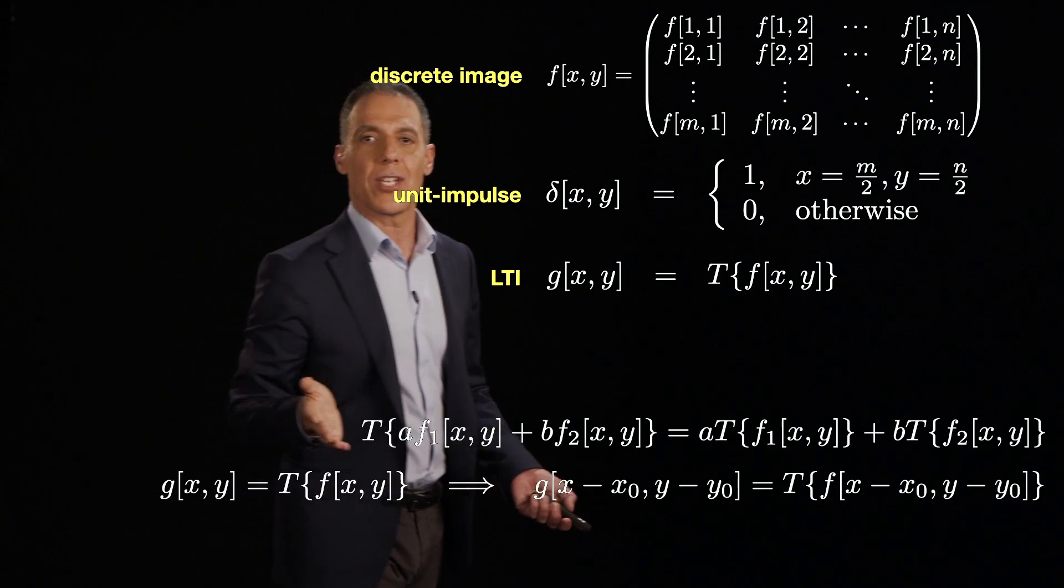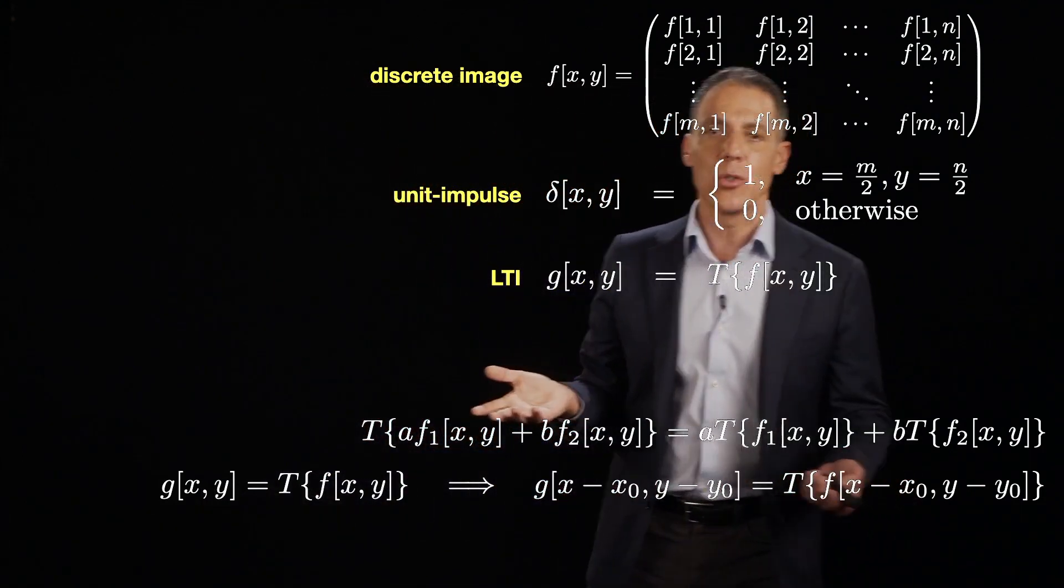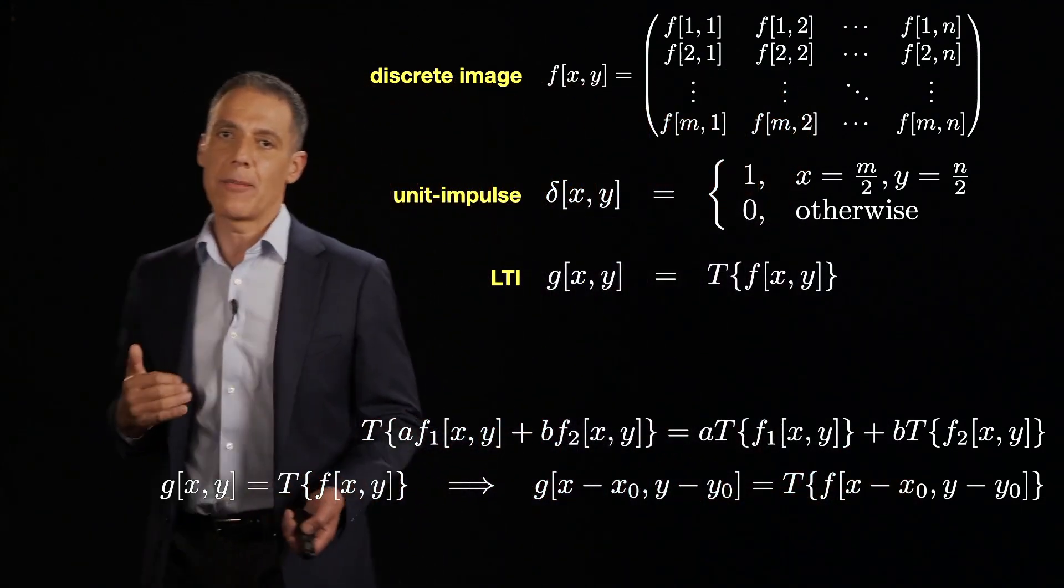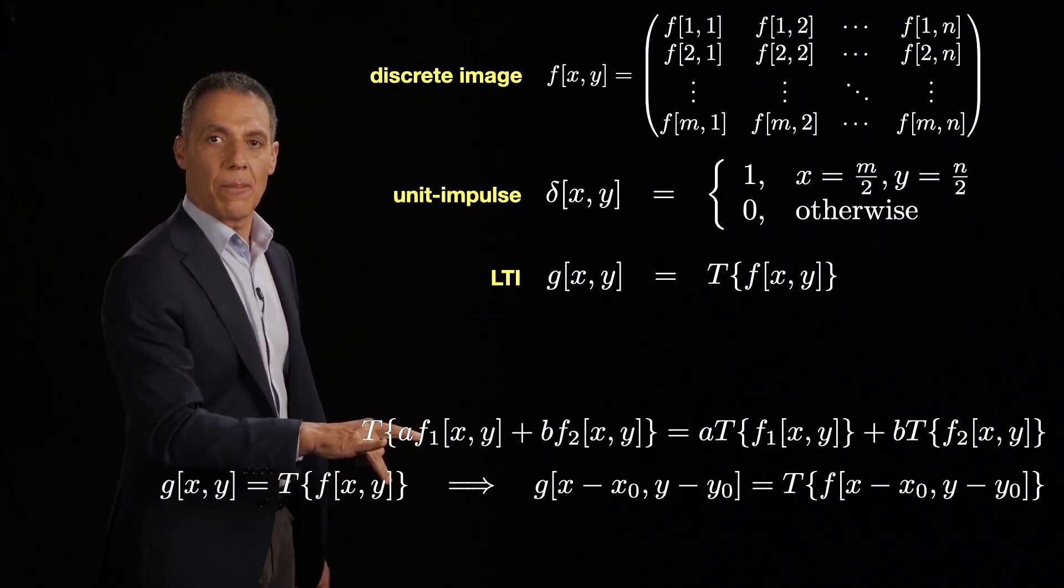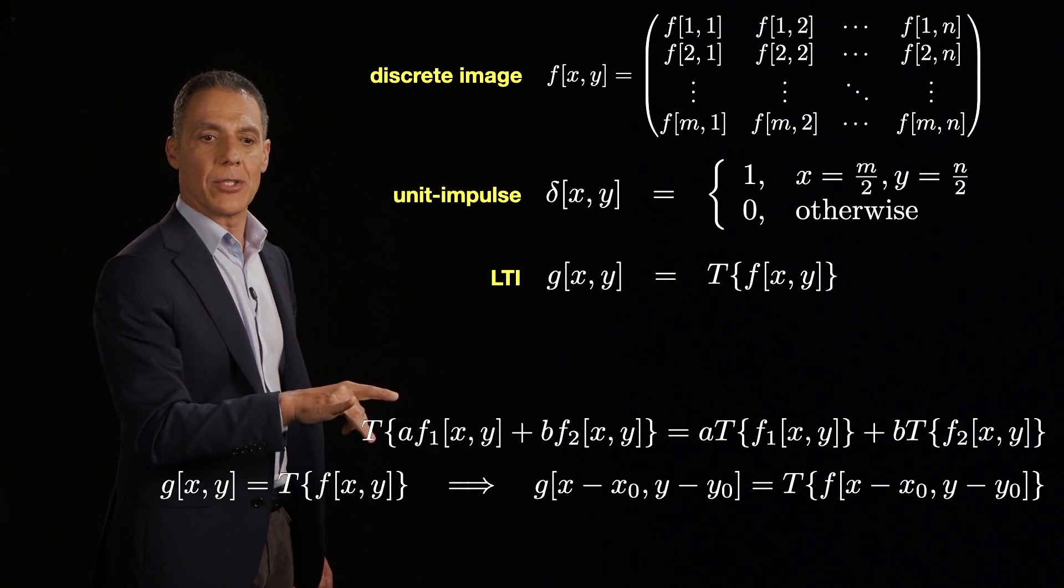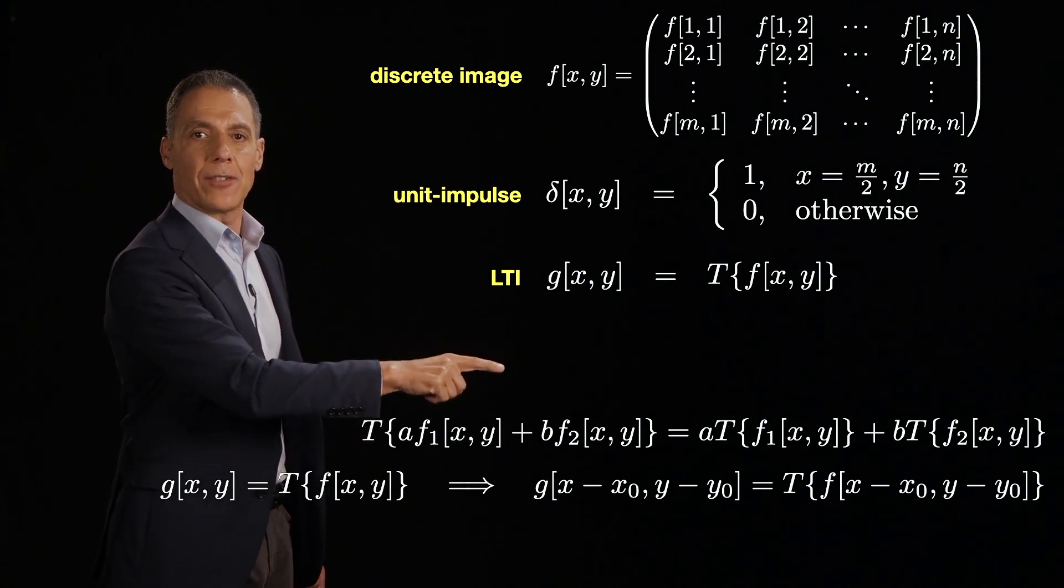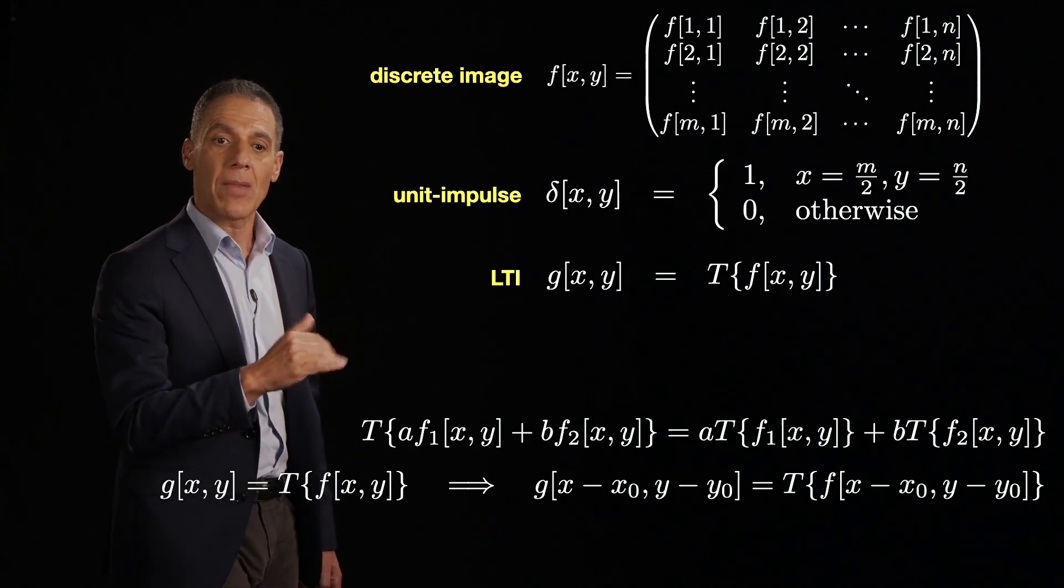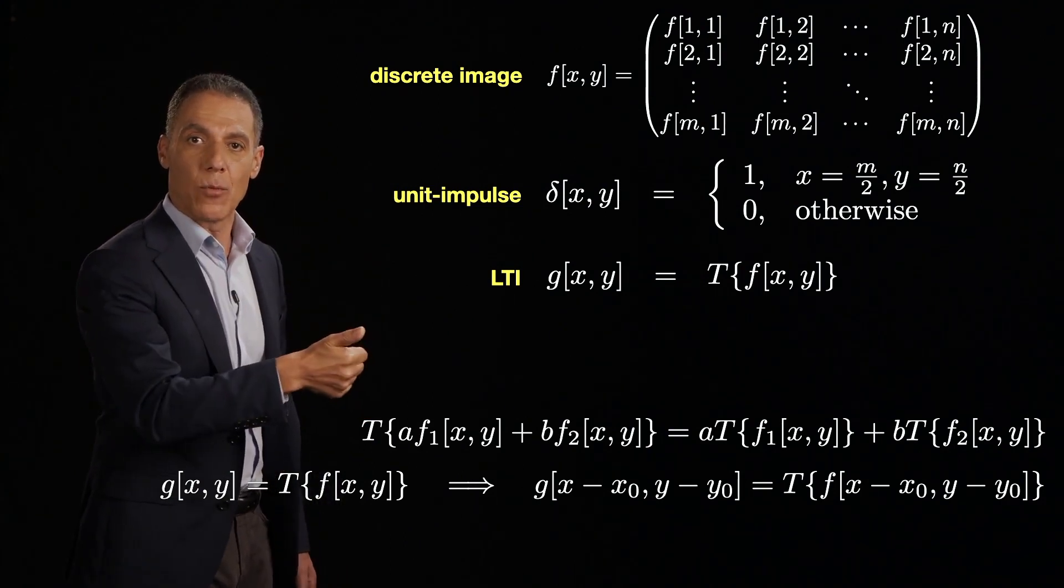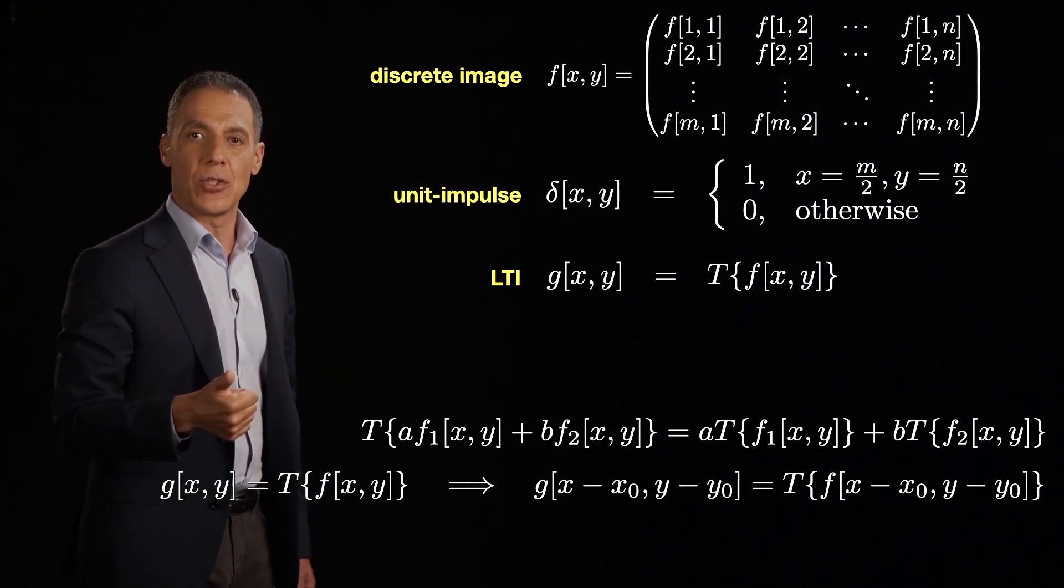Let me remind you of what linear time invariance means. It means that if I give it as input the sum of two scaled images, f1 and f2, scaled by a and b, it is the same as if I had given it f1, given it f2, T of course.